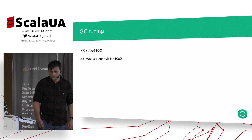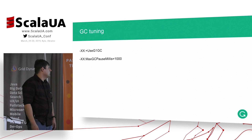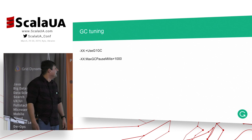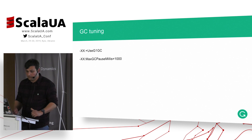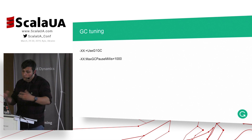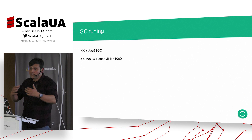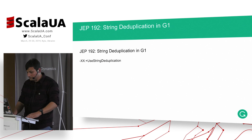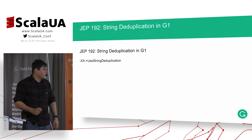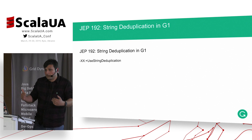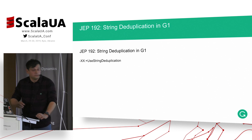Another thing is tuning the garbage collector. We use G1GC. We tune the gc-pause to trade latency for throughput — pauses are longer but GC has time to clean more. The most important thing in our case, because we have a lot of strings that mostly belong to a pretty compact dictionary, is string deduplication.